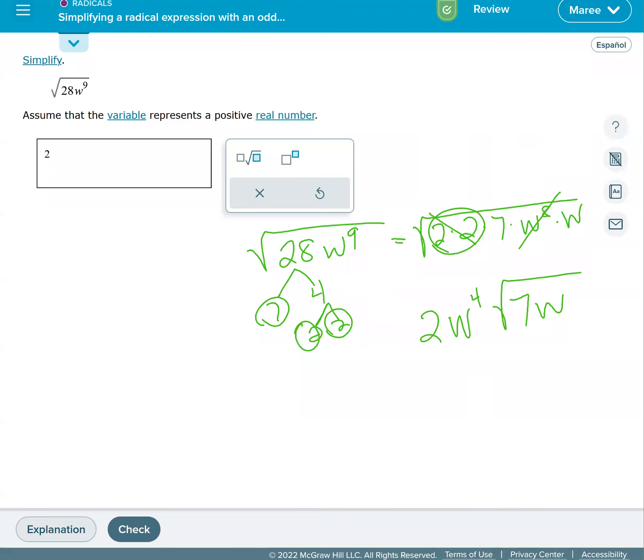So we have two w to the fourth power inside the square root. We're going to have seven w.